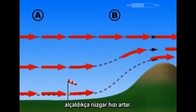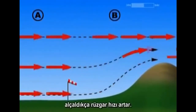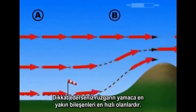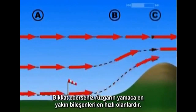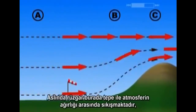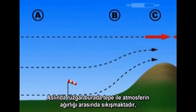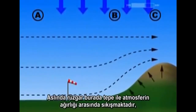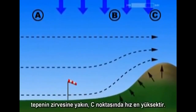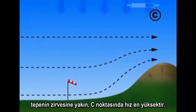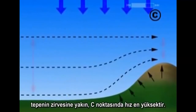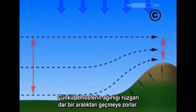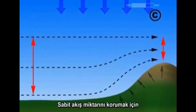At point B, the lower we descend into the air mass, the faster the wind speed is. Notice that the winds closest to the hill are the fastest. In fact, the wind is being compressed between the hill and the weight of the atmosphere. At point C, near the top of the hill, the speed is the highest because the atmospheric weight forces the wind through a narrow passageway.